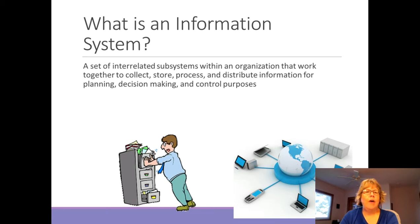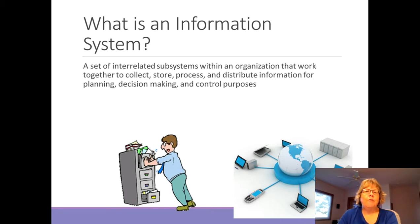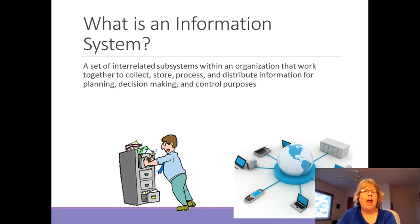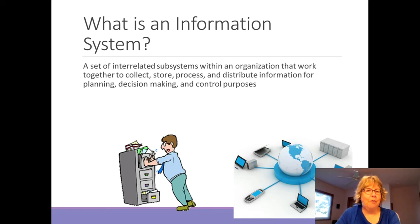In class we talked about a system as interrelated components that get a task done. So how does that relate to an information system? An information system, or IS, is basically interrelated subsystems — different smaller systems that do a particular task — and all these systems come together to collect, store, process, and distribute information.